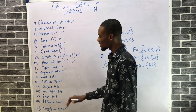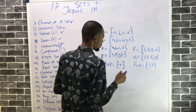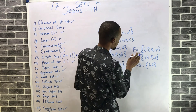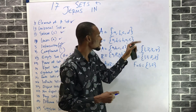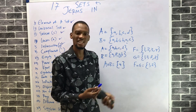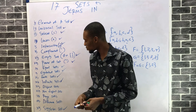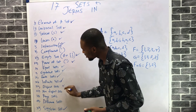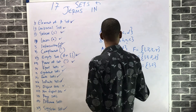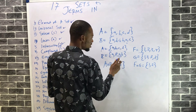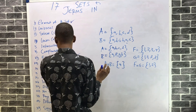Disjoint sets are sets that don't have any elements in common. If two sets don't share anything, they are disjoint. A non-disjoint set has one or two elements in common. For example, two sets sharing one element are non-disjoint.